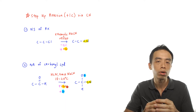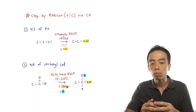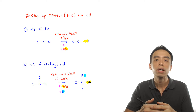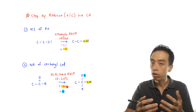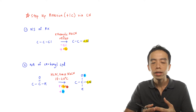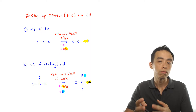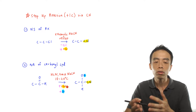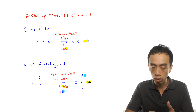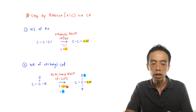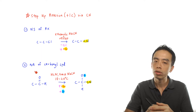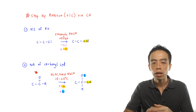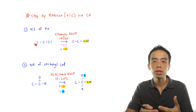So basically I'm adding hydrogen and adding nitrile. So if I need to introduce the nitrile via addition reaction, then what I will have to do is I will have to convert the starting compound to a carbonyl compound, then I do a nucleophilic addition reaction.